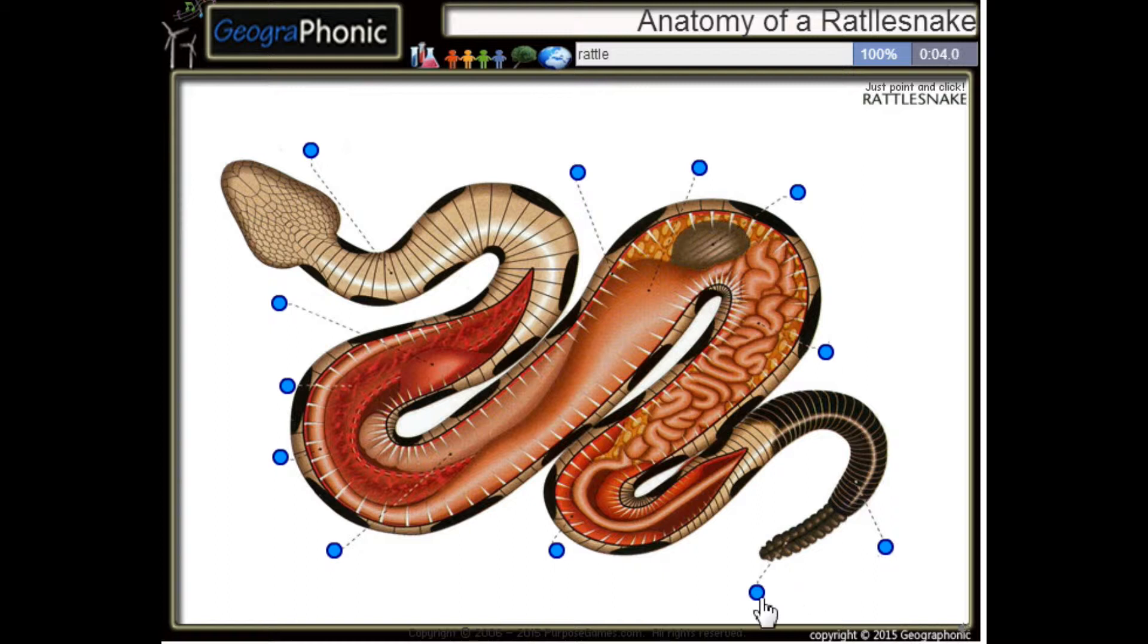This is the rattle of the snake. Here we see a belly scale. This is of course its tail.